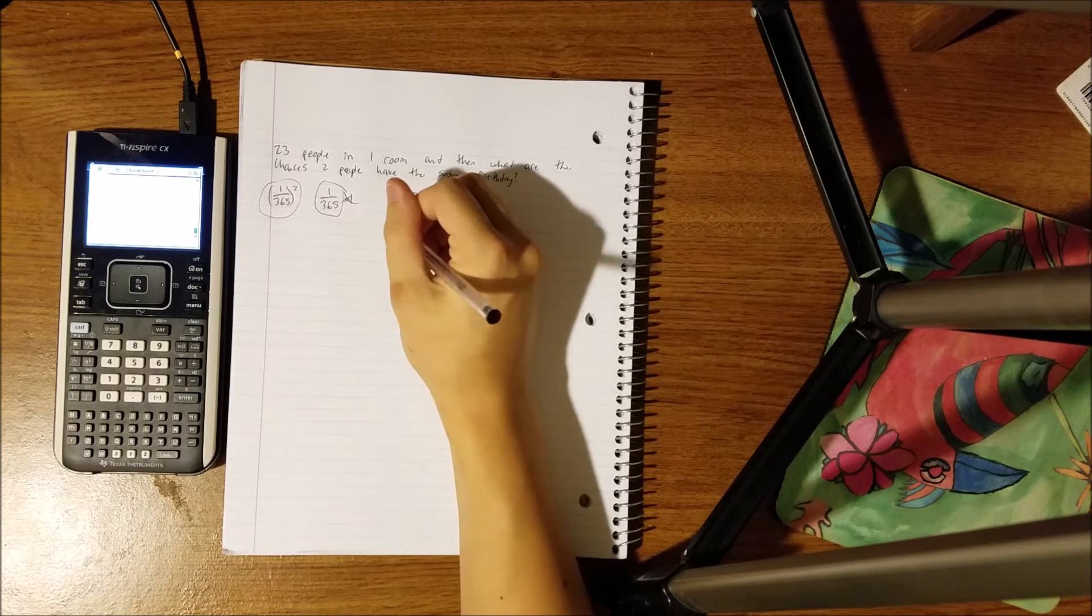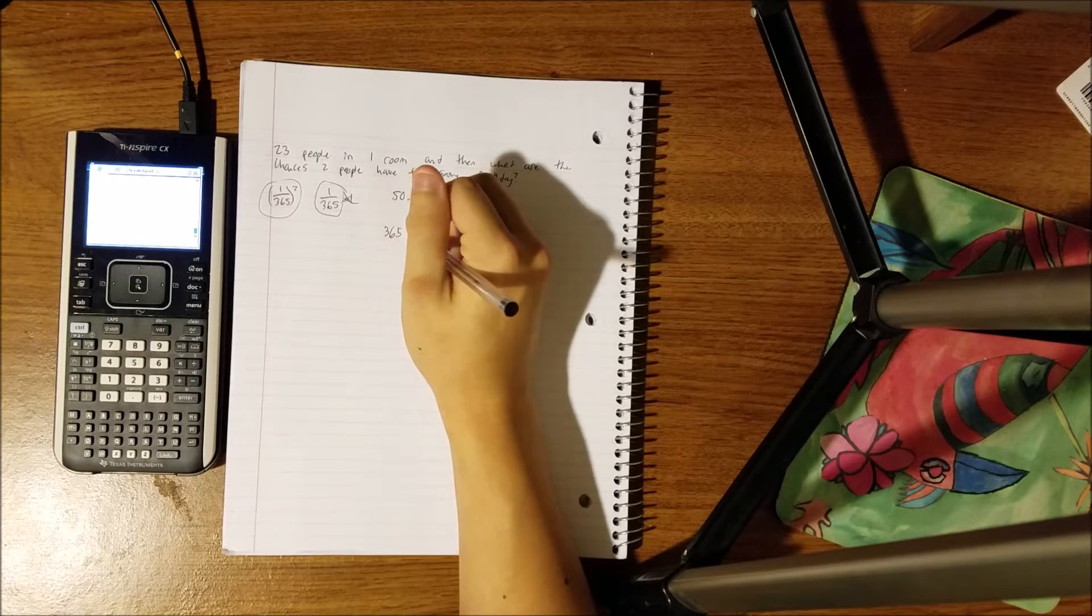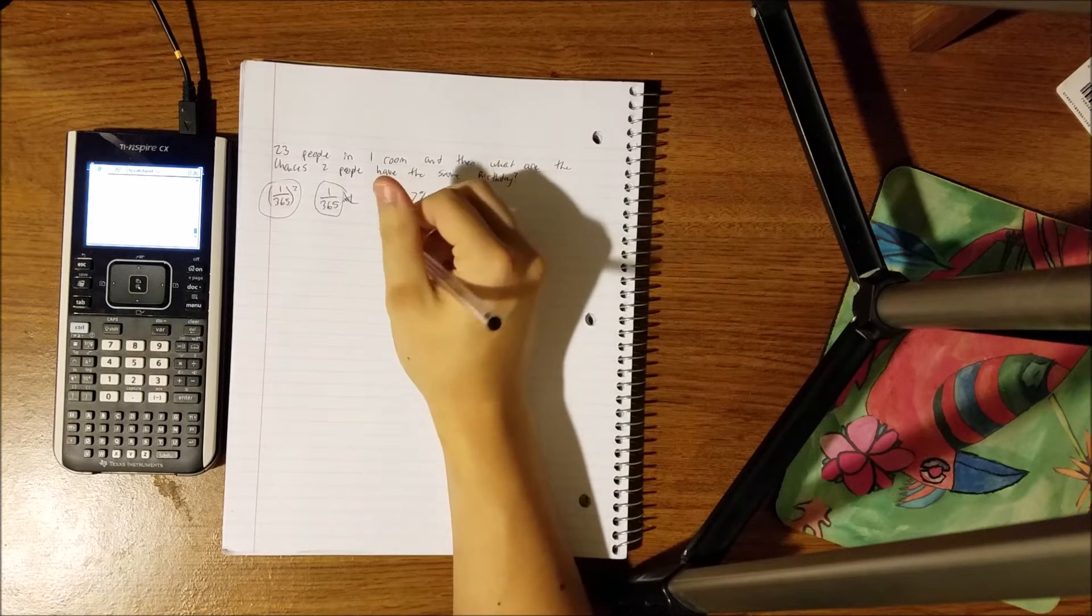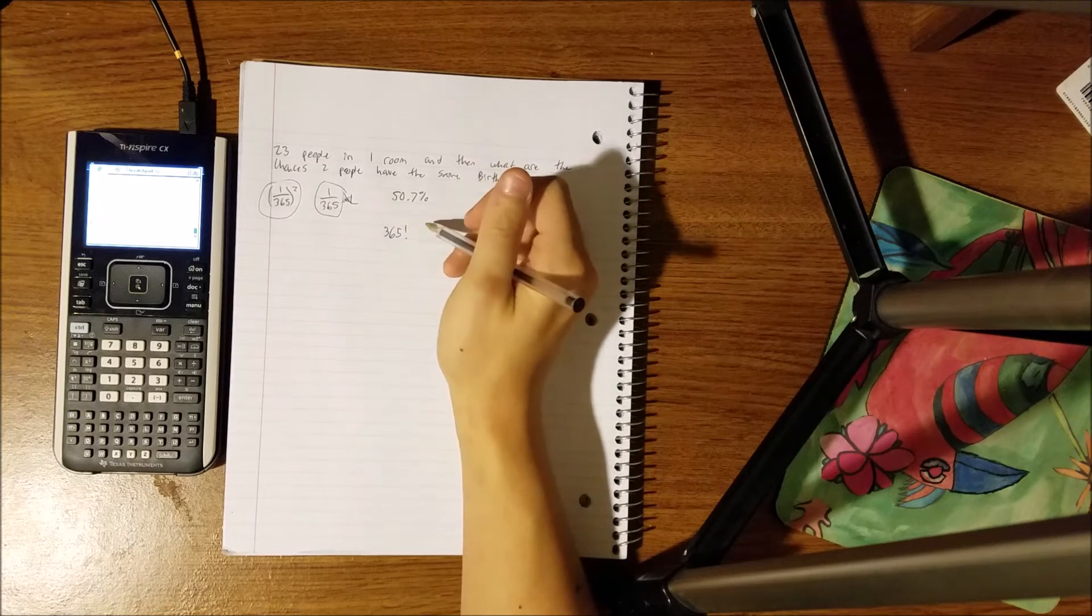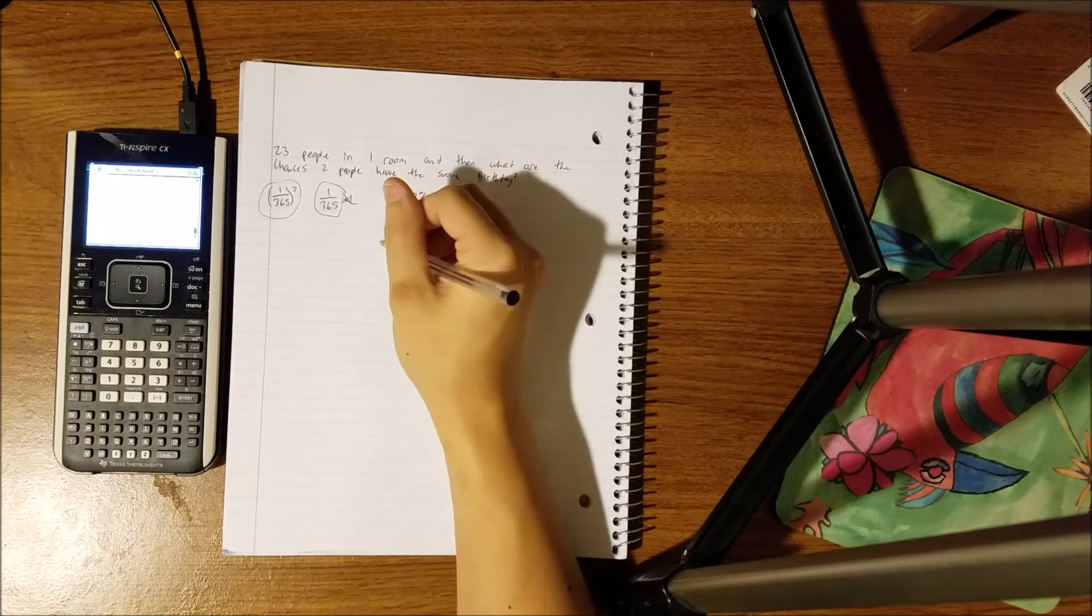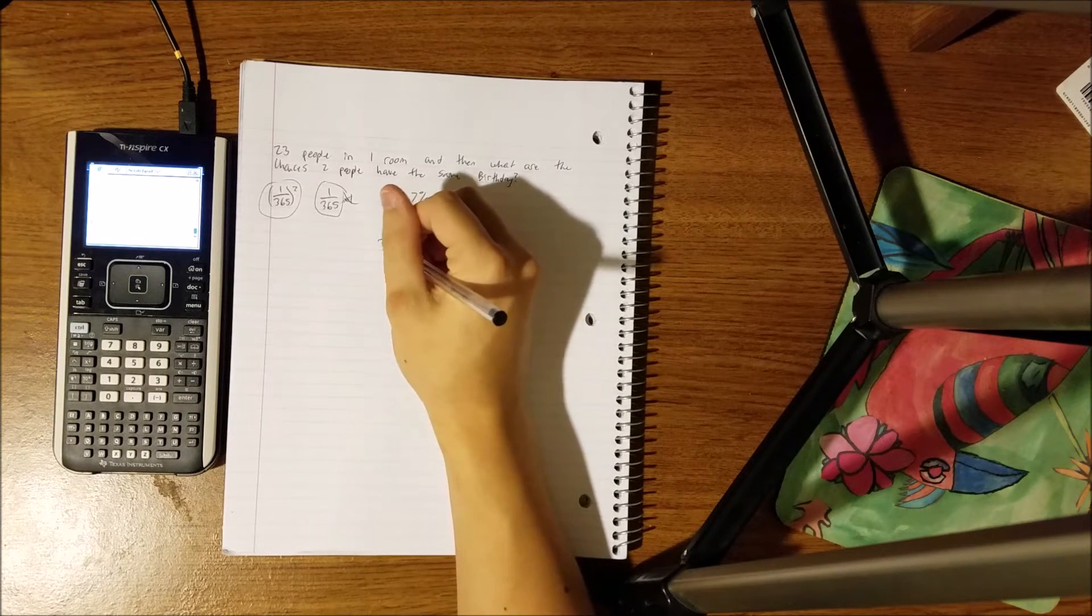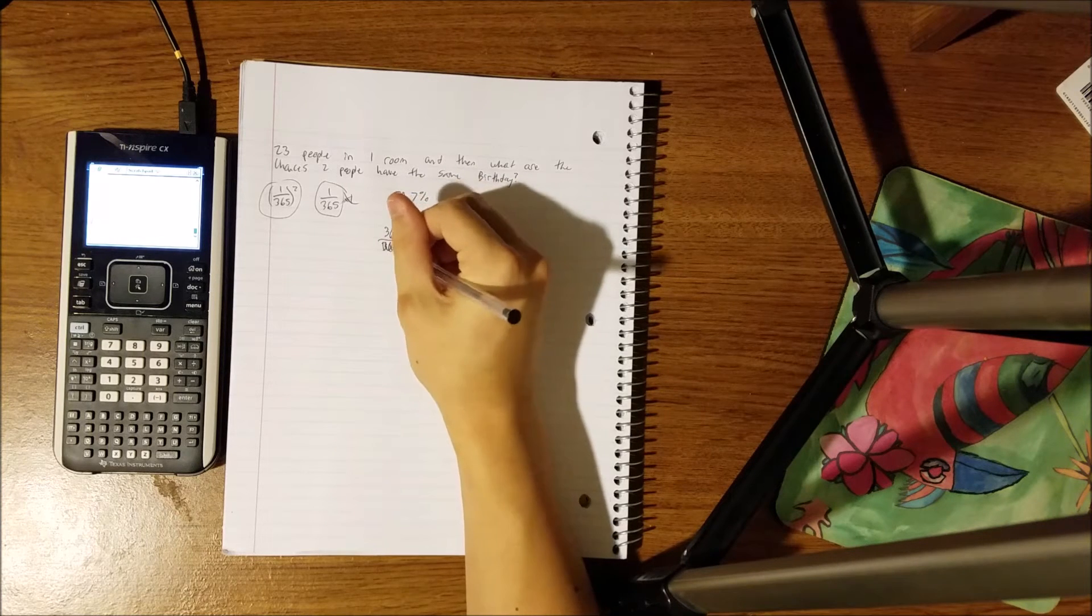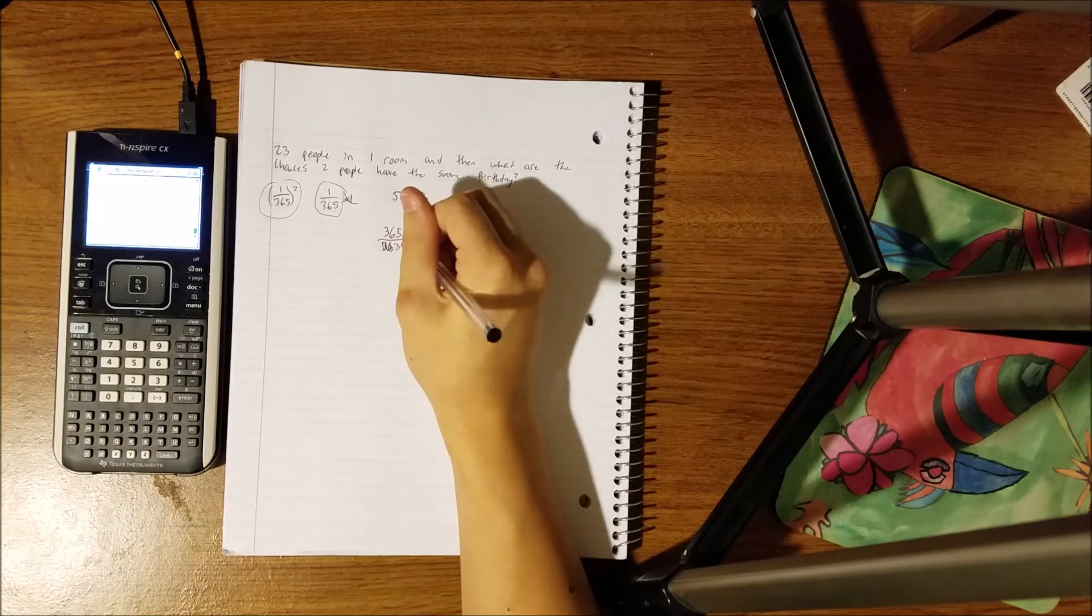First of all, we're going to do 365 factorial, which is factorial, which means 365 times 364 times 363, all the way down to 1, and that is going to be over 342 factorial,